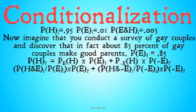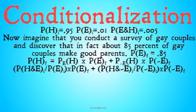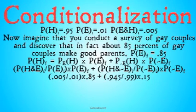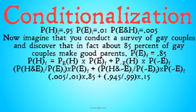In order to use our new principle, we do as follows: P(H final) = P(H|E) × P(E final) + P(H|¬E) × P(¬E final). We then expand P(H|E) and P(H|¬E) using Bayes' theorem. When we plug in our values, we get (0.005 / 0.01) × 0.85 + (0.945 / 0.99) × 0.15, which simplifies down to P(H final) = 0.568.